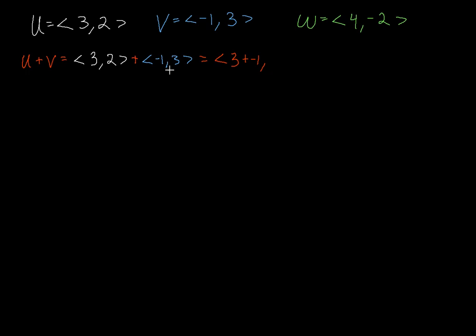If I want the y component, I take the y component of u and I add it to the y component of v. Now these are just regular old numbers that I can add together. 3 plus negative 1 gives me 2, and 2 plus 3 gives me 5. So I can say that u plus v gives you a vector with an x component of 2 and a y component of 5.